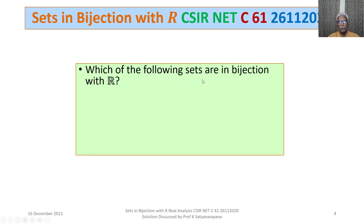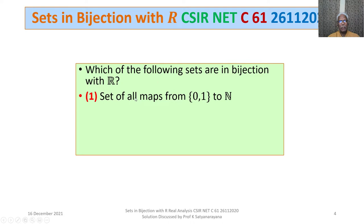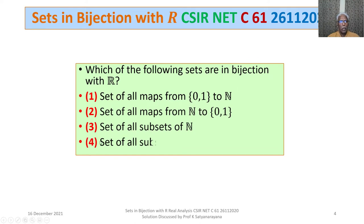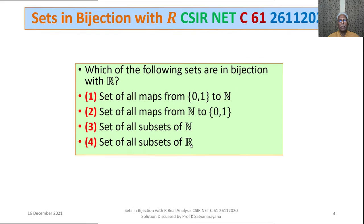Which of the following sets are in bijection with R, the set of real numbers? Option 1: the set of all maps from the set {0,1} to N. Option 2: the set of all maps from N, the set of natural numbers, to the set {0,1}. Option 3: the set of all subsets of N. Option 4: the set of all subsets of R.